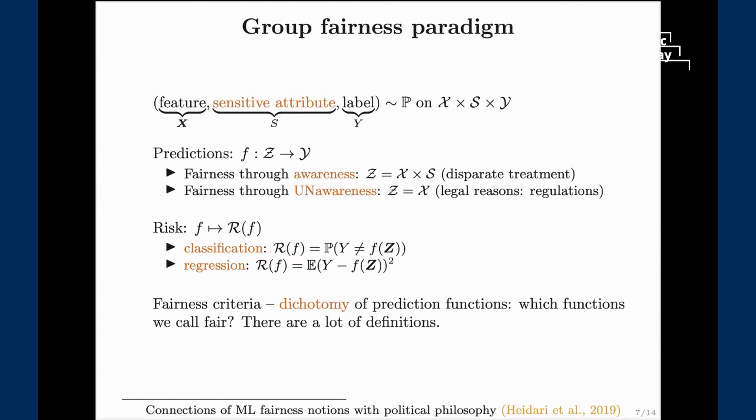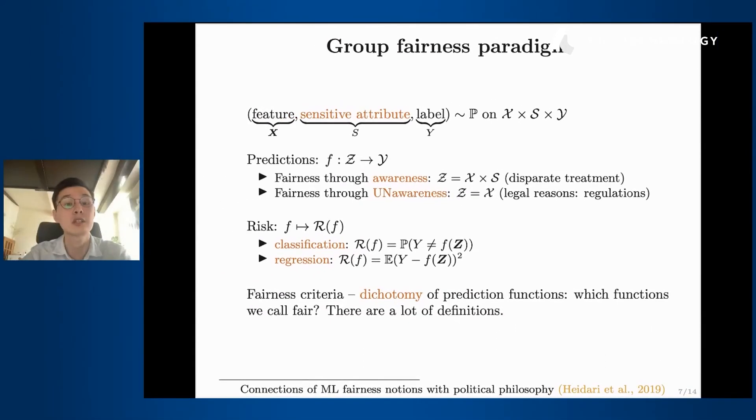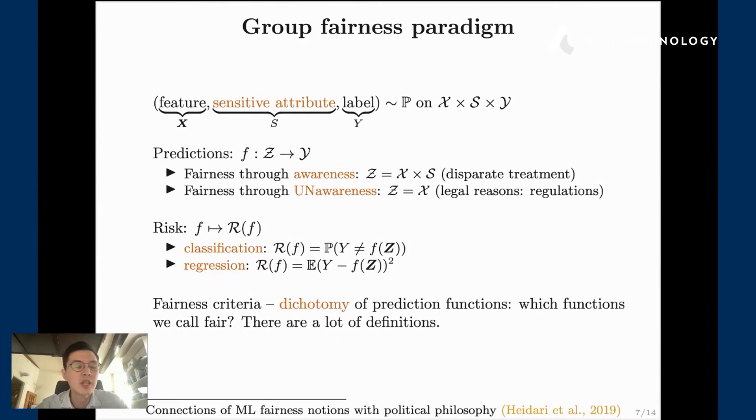The first thing to agree upon is what kind of prediction functions we are going to use. There are two alternatives. First one is called fairness through awareness, which simply means that we are allowing ourselves to construct one prediction function per sensitive attribute. So if it's male and female we are allowing ourselves to construct one prediction function for males and one prediction function for females. It does not mean that we are discriminating, just simply means that we are allowing ourselves to build two functions and potentially we can enforce additional fairness properties on them. Unfortunately often due to legal reasons and regulations you simply cannot do that. So you have to choose one function that you use for both males and females and you cannot have access to the gender explicitly when you're making a prediction. In that case we're talking about fairness through unawareness.